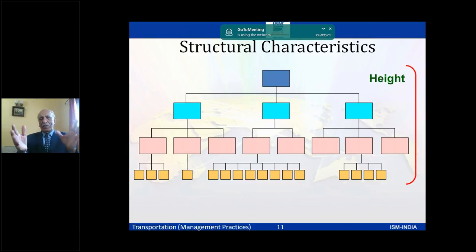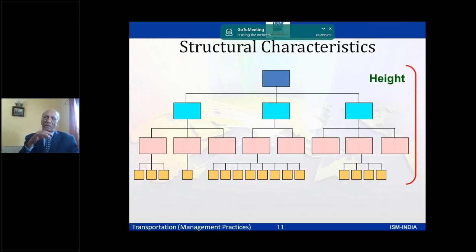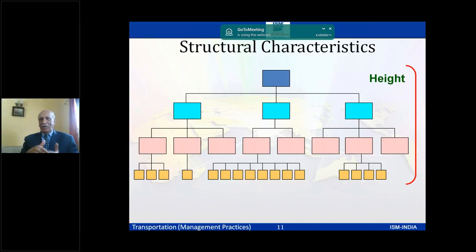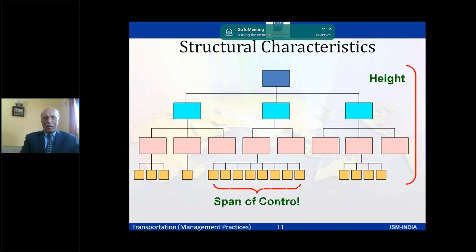A typical organization structure has height — the more hierarchical levels, the taller the organization. More levels mean a bigger gap between top and bottom, creating communication gaps. If the height is less, it is a flat organization where communication travels much faster and is less likely to be distorted.